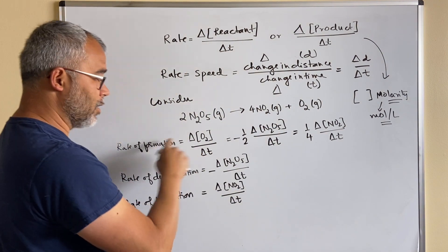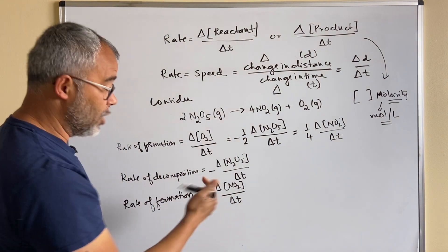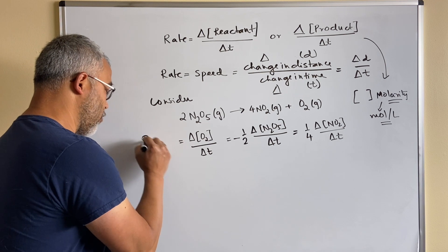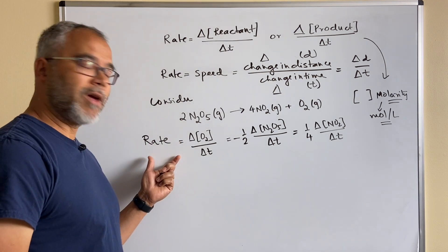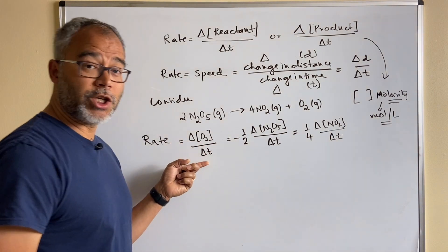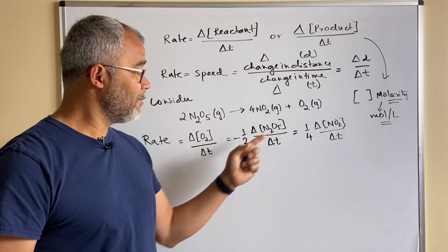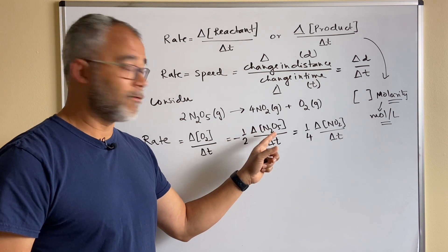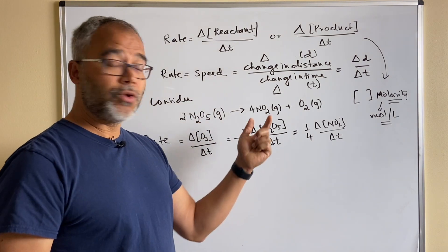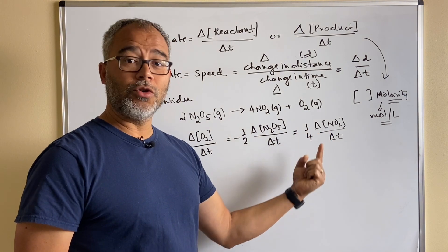Now that we have all the rates expressed and related, we can write the general rate of the reaction. Choosing oxygen: rate = Δ[O₂]/Δt. In terms of N₂O₅ decomposition: rate = −(1/2) × Δ[N₂O₅]/Δt — don't forget the negative sign because it's a reactant. In terms of NO₂ production: rate = (1/4) × Δ[NO₂]/Δt.